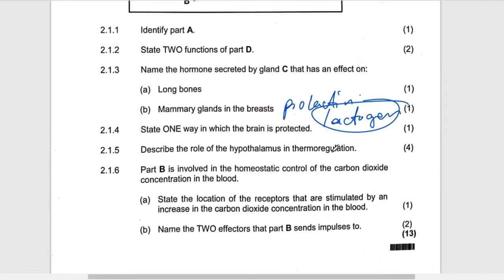Thermoregulation also involves the skin and the sweat gland. So it will also influence the sweat gland — either the sweat gland producing more sweat or producing less sweat. Basically, it receives and interprets impulse from the receptor that is the skin, sends the impulse to the blood vessels to either constrict or dilate, and also influences the sweat gland to be more active or less active.